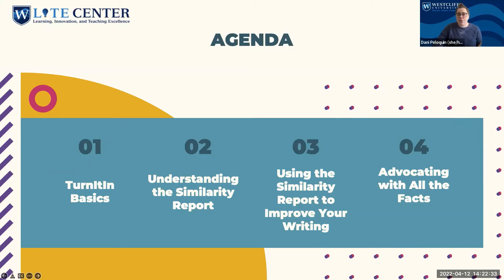Last but not least, we're going to go through some aspects of Turnitin that can help us advocate for ourselves in the classroom. We want to remember that our professors are using Turnitin as a tool the same way that we are, and many times they have as much information about Turnitin as we do. We can use our similarity reports and their feedback to advocate for ourselves and make sure that we're getting the support we need in our writing.